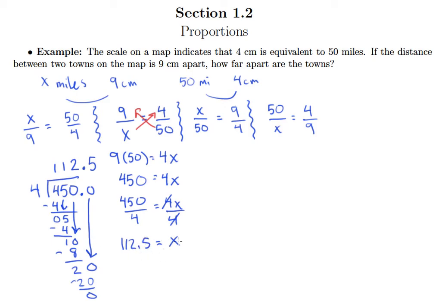But again, I better not circle this as my answer. I need a label on this thing. So 112.5, we were asking about how many miles 9 centimeters on the map would correspond to. And the answer is 112.5 miles.